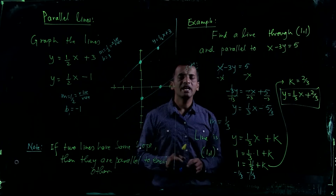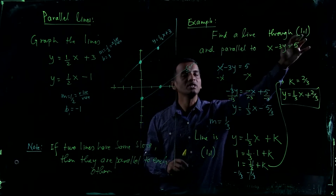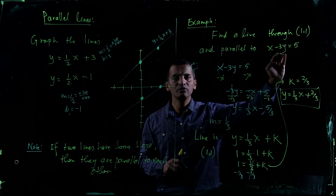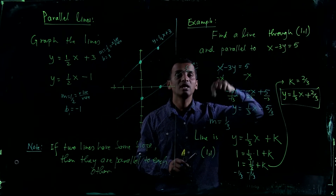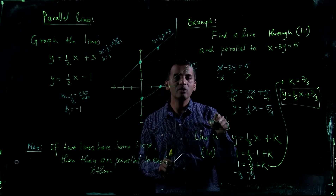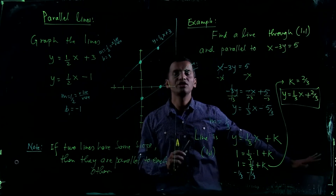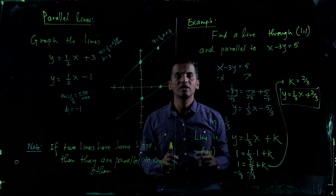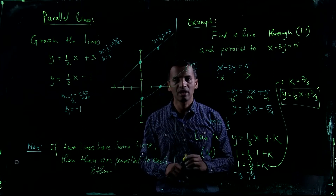The basic idea is: to find a line through a point that is parallel to a given line, first find the slope of the given line. Write y equals that slope times x plus constant k. Plug in the given point to find k, then substitute back to get the final equation.